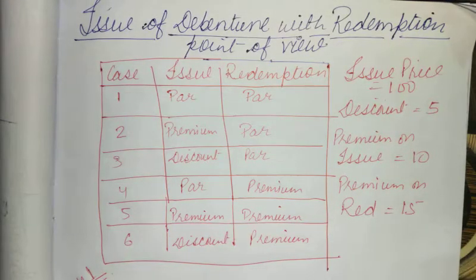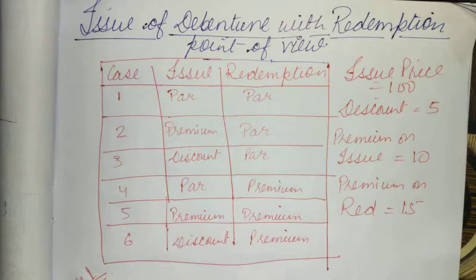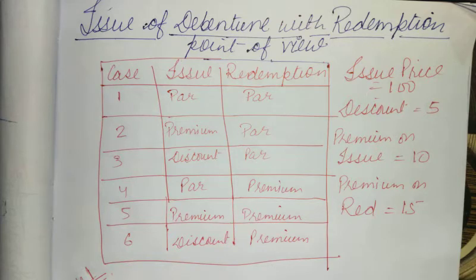Good morning students. Today we are going to discuss one of the important topics of chapter number 9 — that is, issue of debentures with redemption point of view. In this topic we will study that as we issue some debentures, we will think about the date of issue and when we have to redeem them.